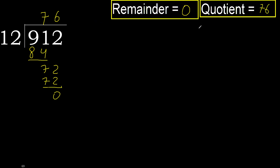Ok, remainder 0. Therefore 912 divided by 12 equals 76.